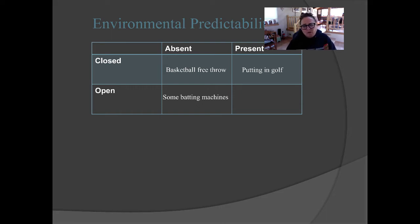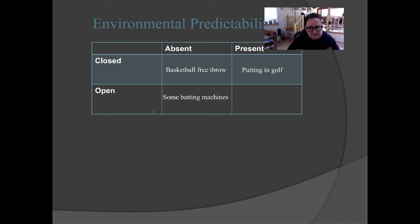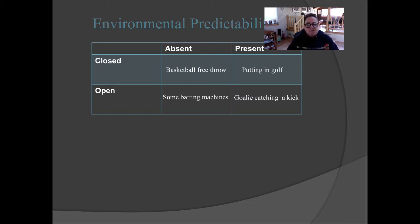Some batting machines have no intertrial variability — the ball is thrown almost exactly the same way each time. But the key question is: are the relevant factors in the environment stationary or moving? If the relevant factors are moving, I have to meet the demands of that open task. Such batting machines are open skills, but they may not require intertrial variability. In the real world, there are no open skills that lack intertrial variability.